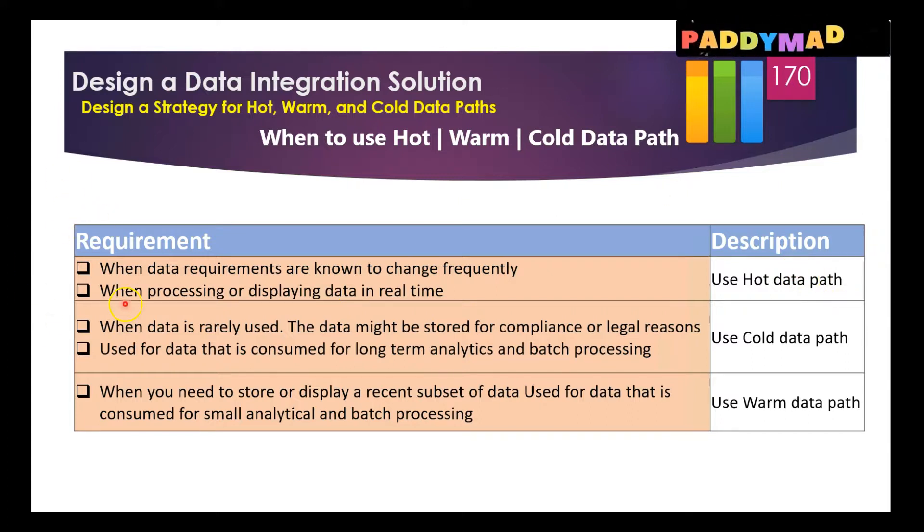When the data is rarely used and the data might be stored for compliance or legal purposes, meaning just for archival similar to the way we use in blobs, then that's called a cold data path, used for data that is consumed for long-term analytics and batch processing.